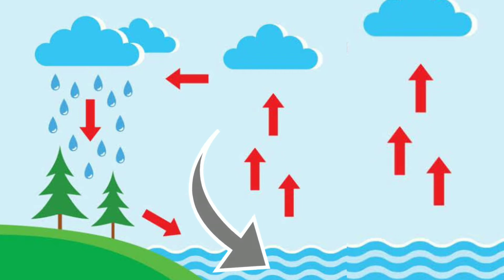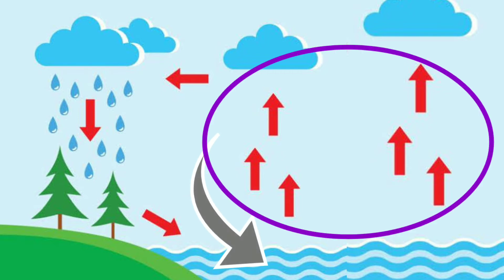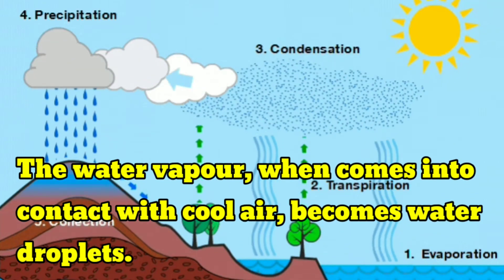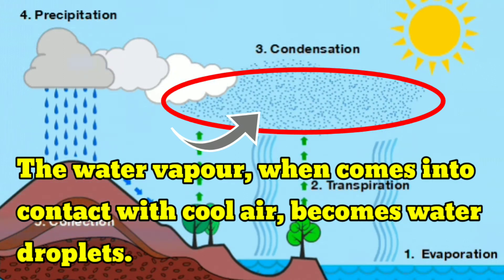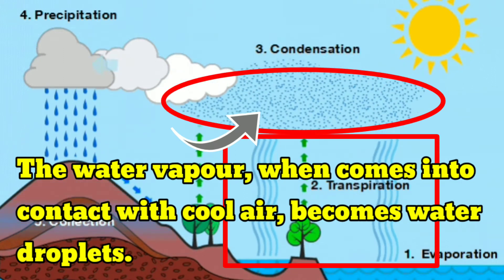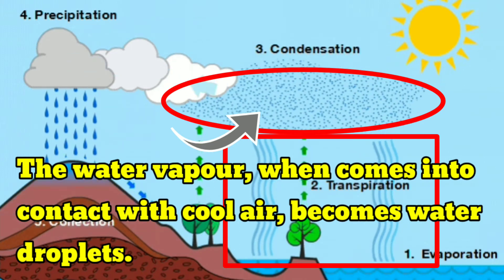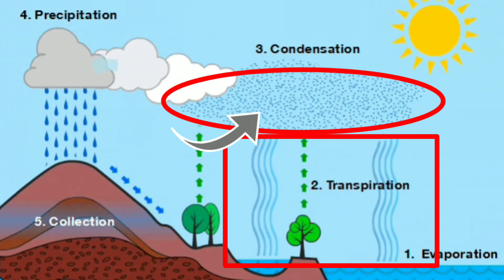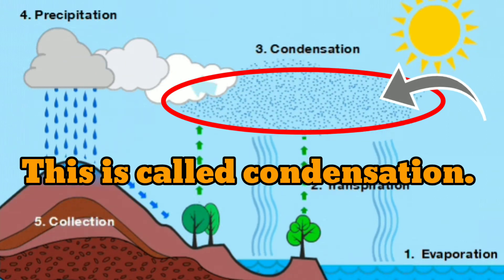Water becoming water vapour and rising is called evaporation. Niranadu, veppatthi nal, niraviyagamari mele vay, aviyadal. The water vapour, when it comes into contact with cool air, becomes water droplets. Children, this is called condensation.